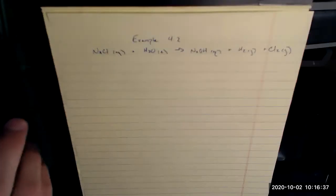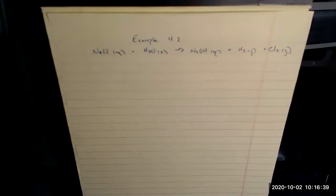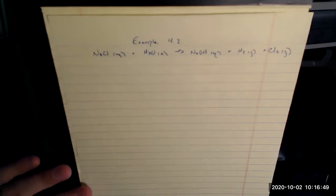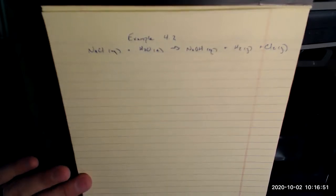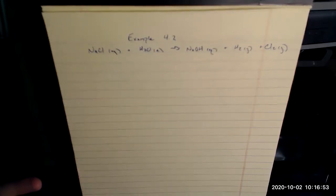In example 4.2, we are asked to write a balanced net ionic equation for the electrolysis of brine. I've rewritten what we're given on slide 27, a balanced net ionic equation, and the keyword is balanced. We always have to balance a reaction before we get the net ionic equation.